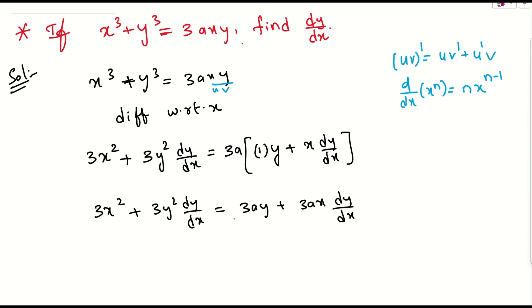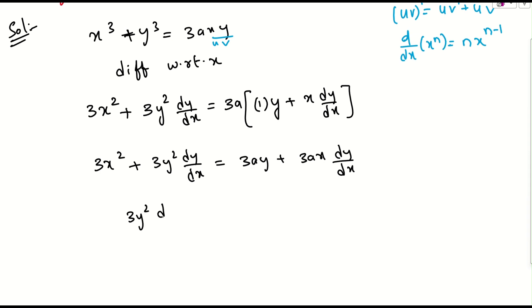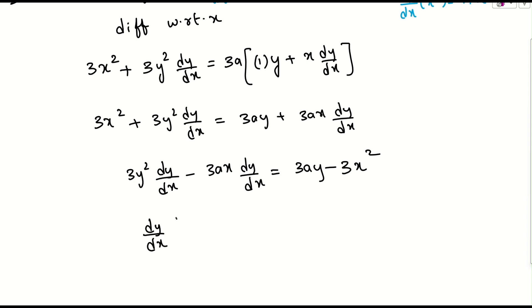So what should we do? We have to take all the $dy/dx$ terms to one side. The right side one, that is minus $3ax \cdot dy/dx$, I'll be getting on the left side. If it goes to the right side, this is $3x^2$.